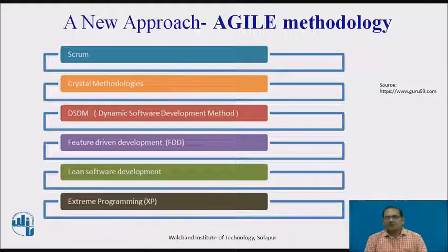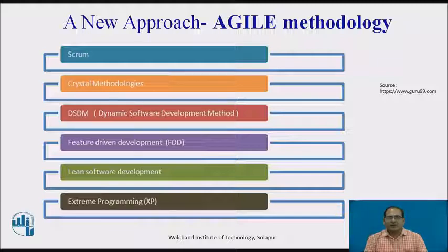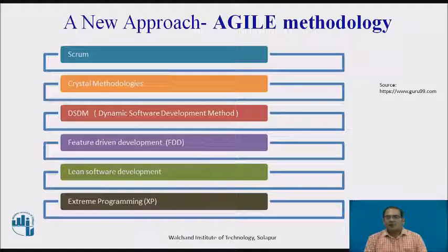Agile methodology is a practice that promotes continuous iteration of development and testing throughout the software development lifecycle of the project. Both development and testing activities are concurrent, unlike the waterfall model. A few of the agile methodologies are Scrum, Crystal methodology, Dynamic Software Development methodology (DSDM), FDD, Lean Software Development, and Extreme Programming. Here I am going to discuss more detail about the Scrum methodology.